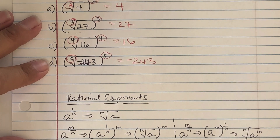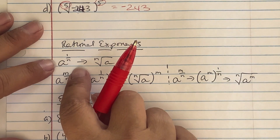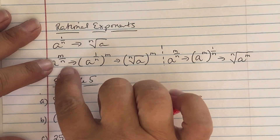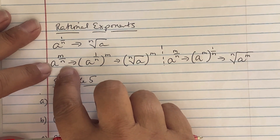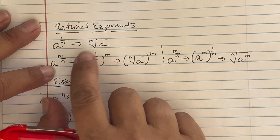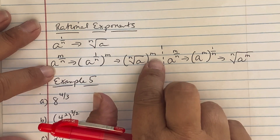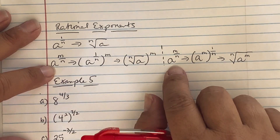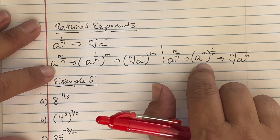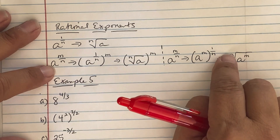Rational exponents: if we see a to the 1 over n, it's the same as writing the nth root of a. If we see a to the m over n, it can be written two ways: as the nth root of a in parentheses raised to the power of m, or as the nth root of a to the m. Same results, just two different ways.